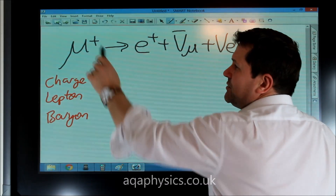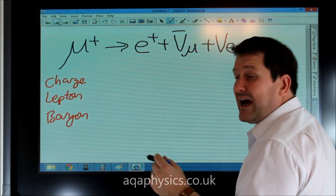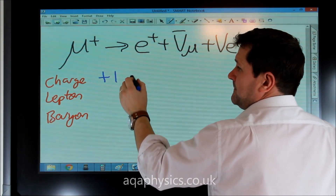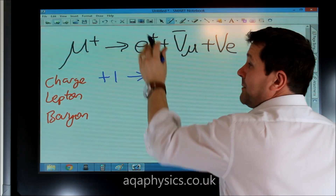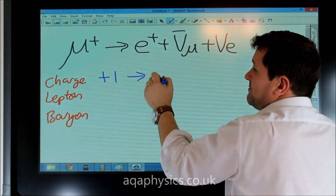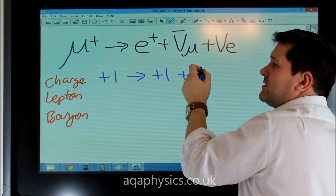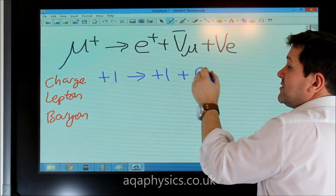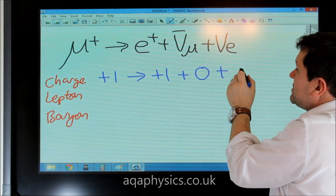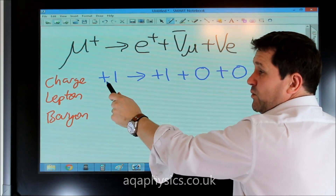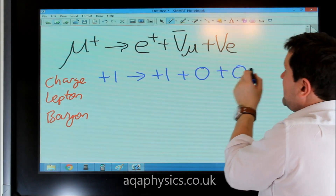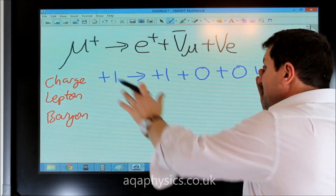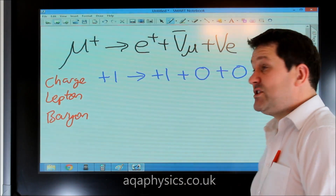If we look at an interaction such as this — we've got an anti-muon going to a positron, plus an anti-muon neutrino, plus an electron neutrino — we have to ask: can it occur? Looking at charge: the anti-muon has charge plus one, the positron has charge plus one, and the two neutrinos have no charge. One on each side, so charge balances. This interaction could occur in terms of charge.